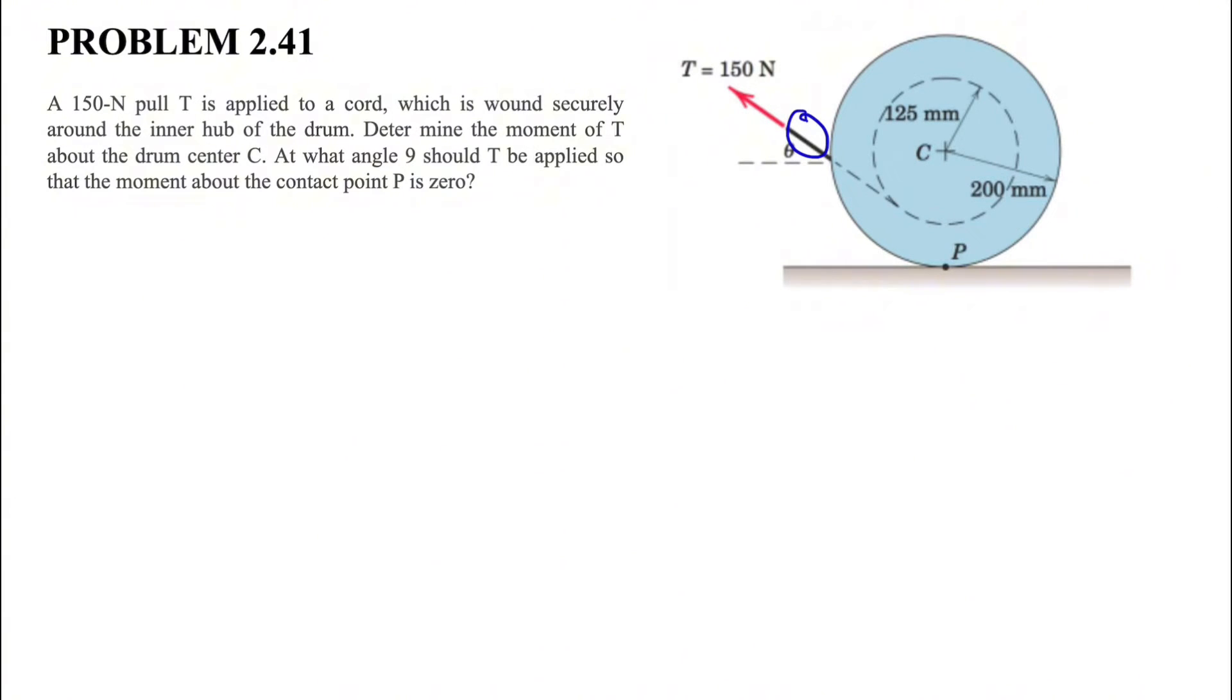The cord is wound securely around the inner hub of the drum, shown by the dotted line inside the drum. We know the radius is 125 millimeters and we need to determine the moment of T about the drum center C.